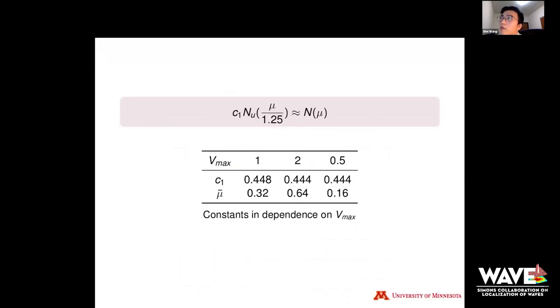Here I summarize what I used for the previous three cases. We have three V_max: 1, 2, and 0.5. We use very similar scaling constant c1: 0.448, 0.444, and 0.444. We find the effective energy level μ_bar is 0.32, 0.64, and 0.16. That supports our conjecture as a practical landscape law. We see that c1 and μ_bar are quite independent of the matrix size k, and c1 is also very insensitive to V_max, but μ_bar, we can see, is very roughly speaking linearly dependent on V_max.